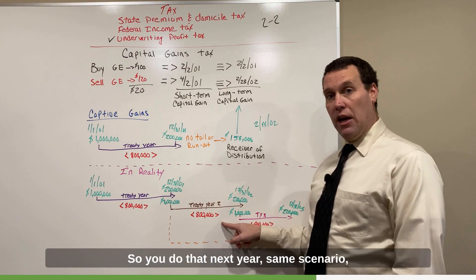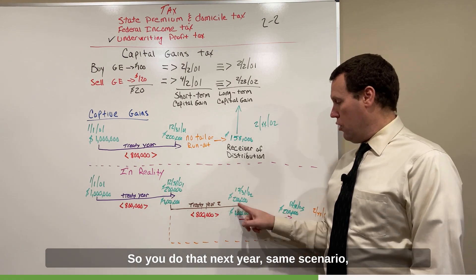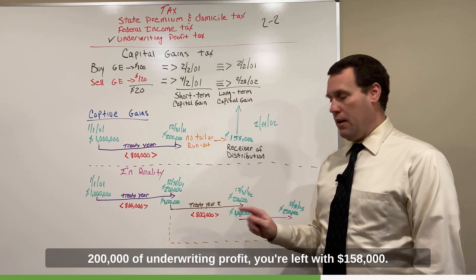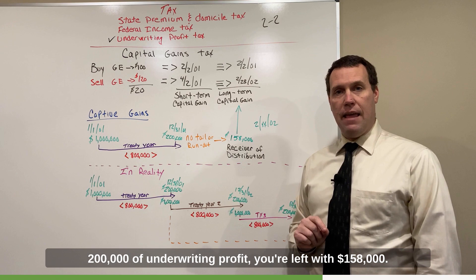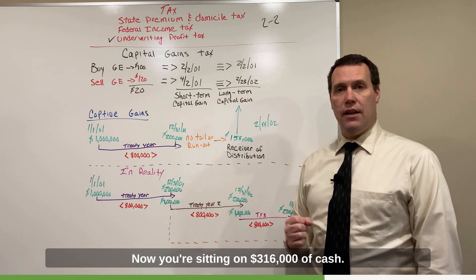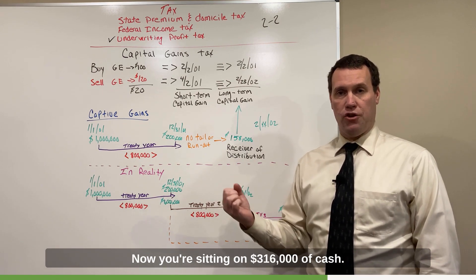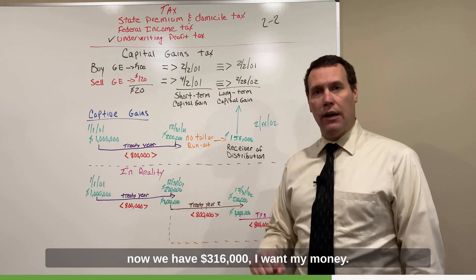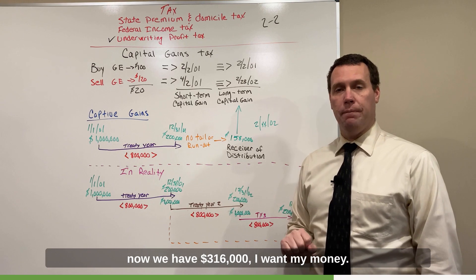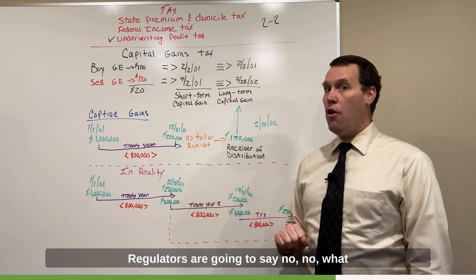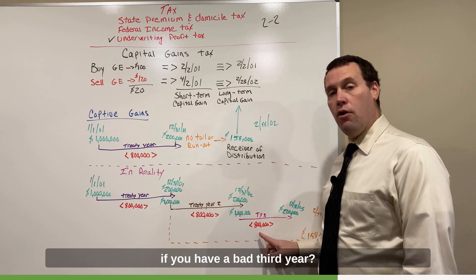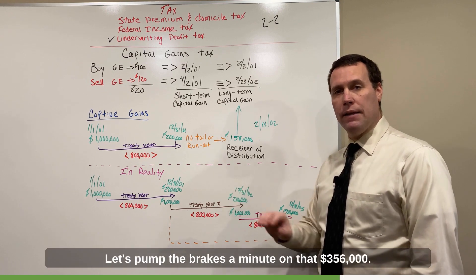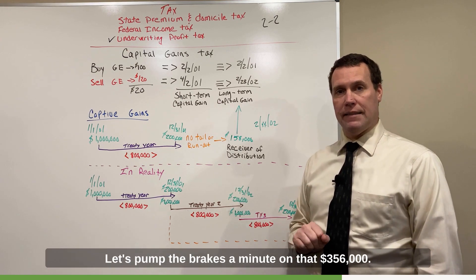So you do that. Next year, same scenario. $200,000 of underwriting profit. You're left with $158,000. Now you're sitting on $316,000 of cash. You go to the regulator and say, hey, now we have $316,000. I want my money. The regulator is going to say, no, no, no. What if you have a bad third year? Let's pump the brakes a minute on that $316,000.